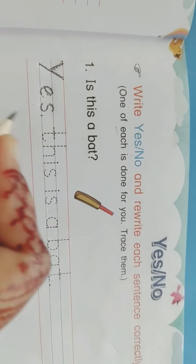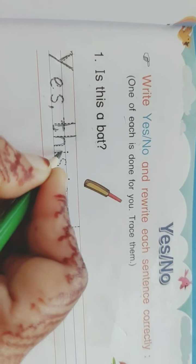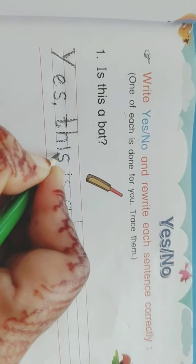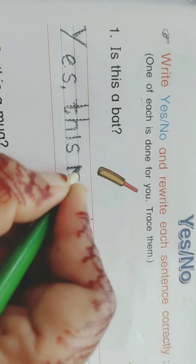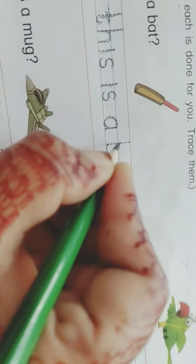You have to trace here. So, Y-E-S, yes, comma, this, T-H-I-S, this, is, I-S, is a bat. This is a bat.